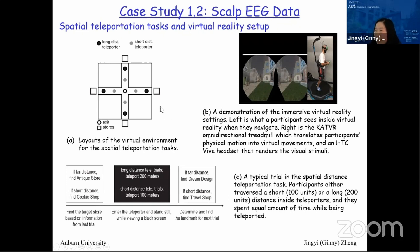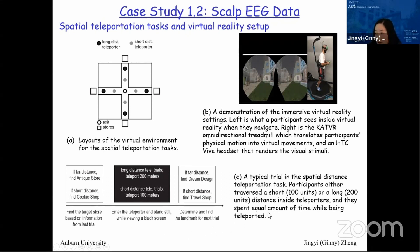In this spatial teleportation task, the participant tries to differentiate long versus short distance from their entry to exit point. There are two types of teleporters — short distance and long distance — and the participant goes to different target stores, indicating whether they think they experienced a long or short teleporter. The panel shows the virtual city setting and equipment including the omnidirectional treadmill and virtual reality sets. The typical trial traverses either a short or long distance while keeping time constant.